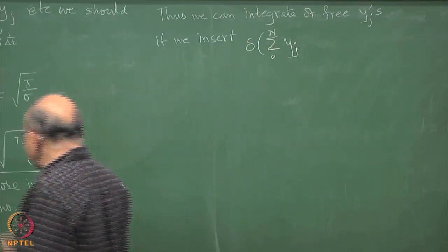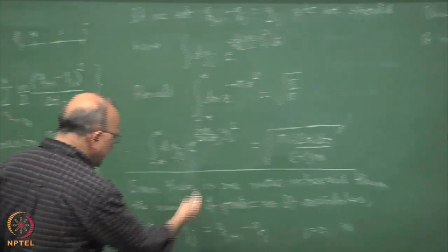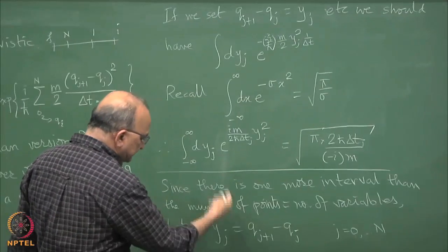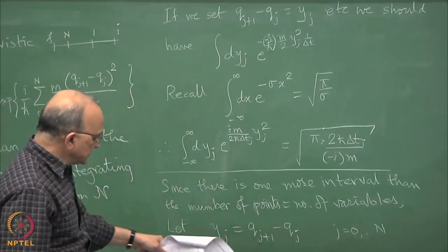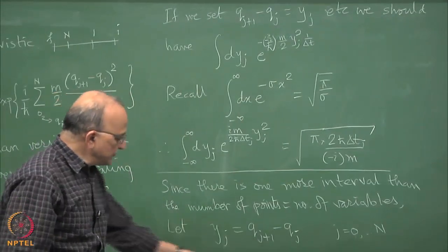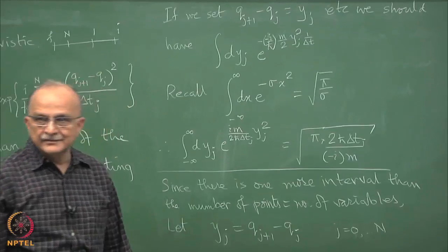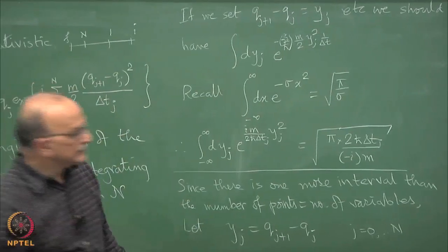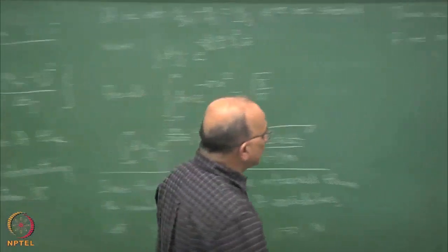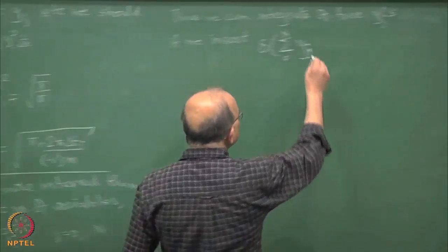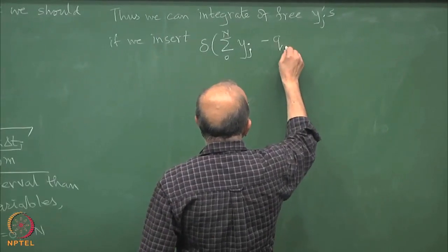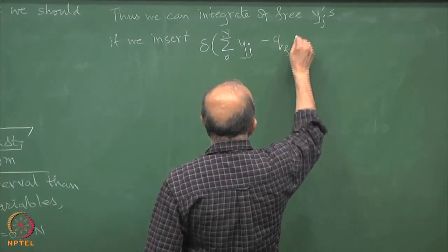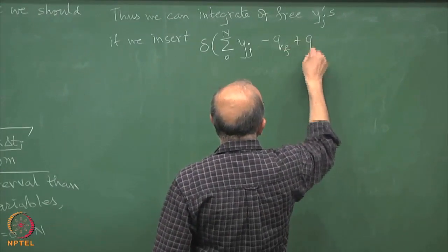How do we handle the constraint? Well, if you add all of them, then you will get q_f minus q_i — the sum over all the y's is just q_f minus q_i, so minus q_f plus q_i.